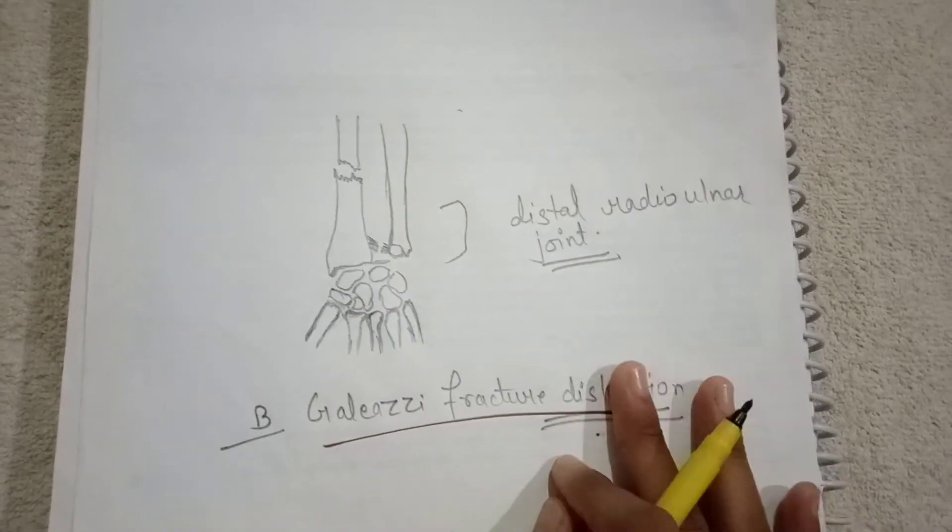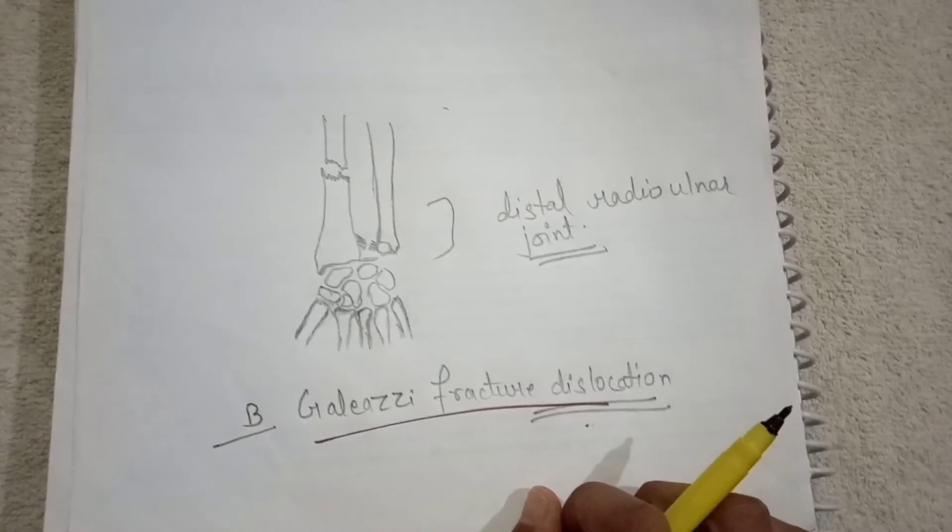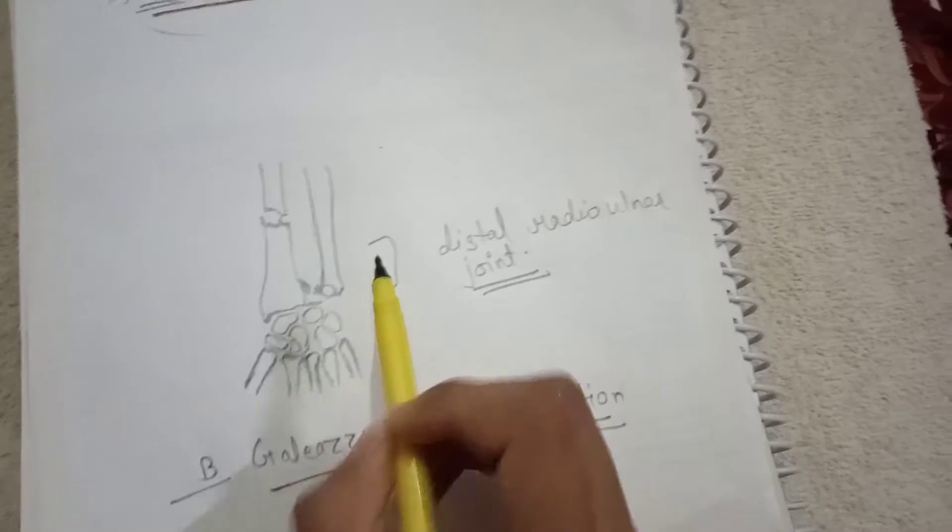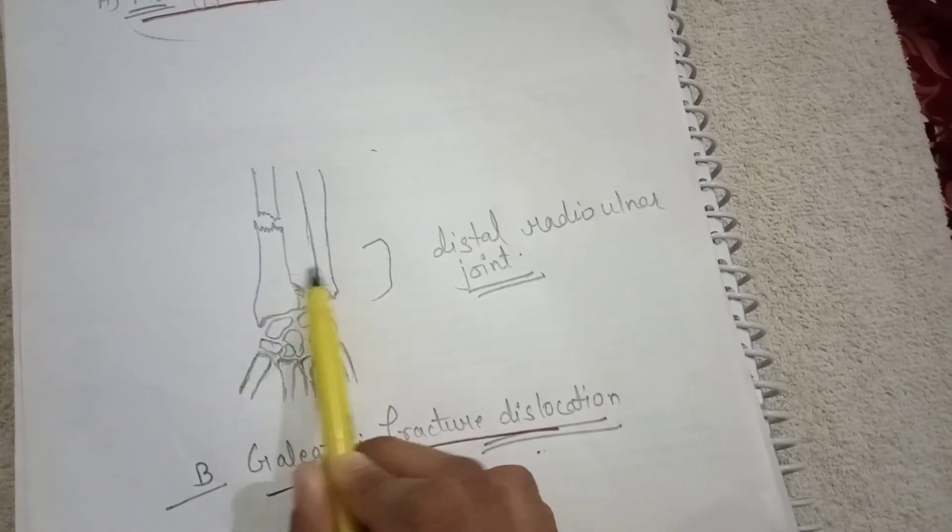Galeazzi fracture dislocation. Now in this type of fracture there is fracture of distal third of radius and dislocation of distal radioulnar joint.